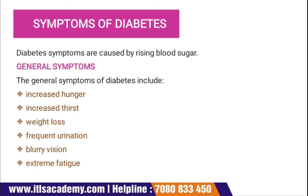Now let's see the symptoms of diabetes. Diabetes symptoms occur due to rising blood sugar. The general symptoms include: increased hunger, increased thirst, weight loss, frequent urination, blurry vision, and extreme fatigue. These are the general symptoms of diabetes.